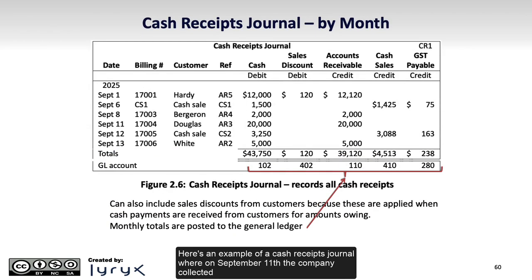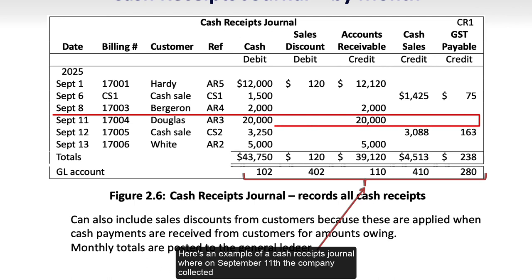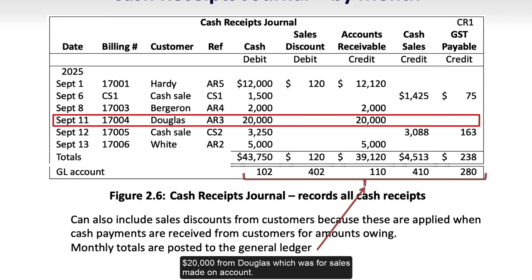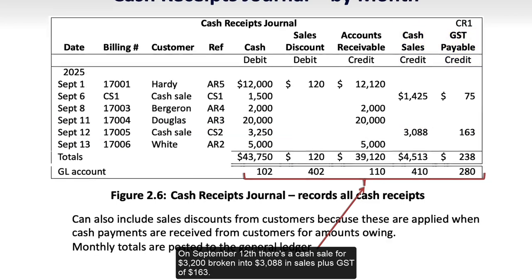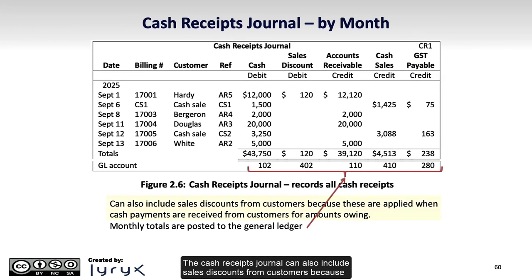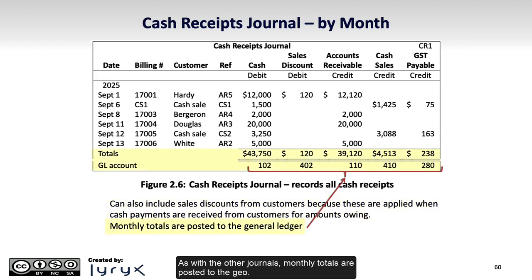Here's an example of a cash receipts journal, where on September 11th, the company collected $20,000 from Douglas, which was for sales made on account. On September 12th, there's a cash sale for $3,200, broken into $3,088 in sales plus GST of $163. The cash receipts journal can also include sales discounts from customers, because these are applied when cash payments are received from customers for amounts owing. As with the other journals, monthly totals are posted to the GL.